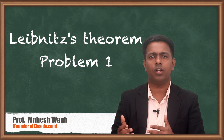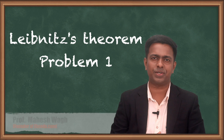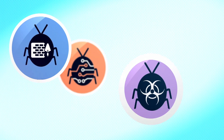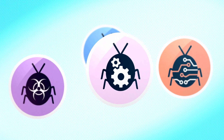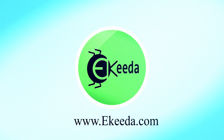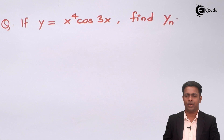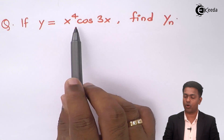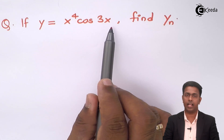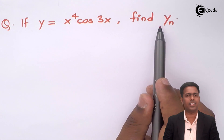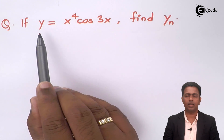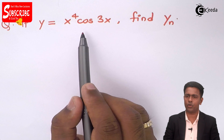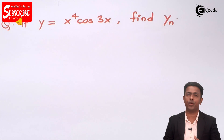Here you can see that y is given as x to the power 4 times cos of 3x, and we have to find out the value of the nth derivative. Since the function is in the form of u times v, to find out the nth derivative we need to use the Leibniz theorem.